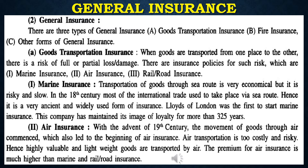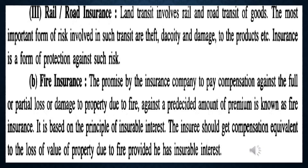Air insurance: with the advent of the 19th century, the movement of goods through air commenced, which led to the beginning of air transportation insurance. Air transportation is too costly and risky, hence highly valuable and lightweight goods are transported by air. The premium for air insurance is much higher than marine and railroad insurance. Third, railroad insurance.